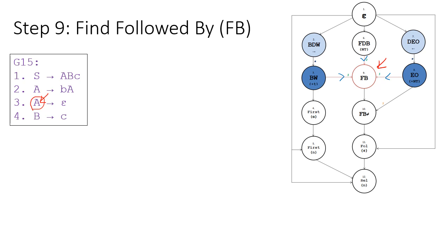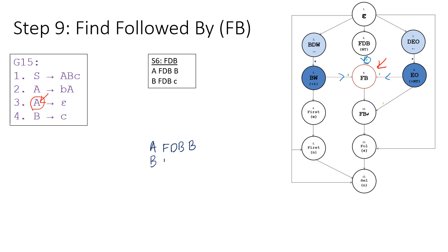Let's take a look at step 6 first, because step 6 is at position 2 and step 6 is actually the bridge connecting step 3 and step 8. If you remember, step 6 FDB — the 2 relations derived for FDB are A FDB B and B FDB C. So I'm going to write them: A FDB B and B FDB C. Step 6 is at position 2.